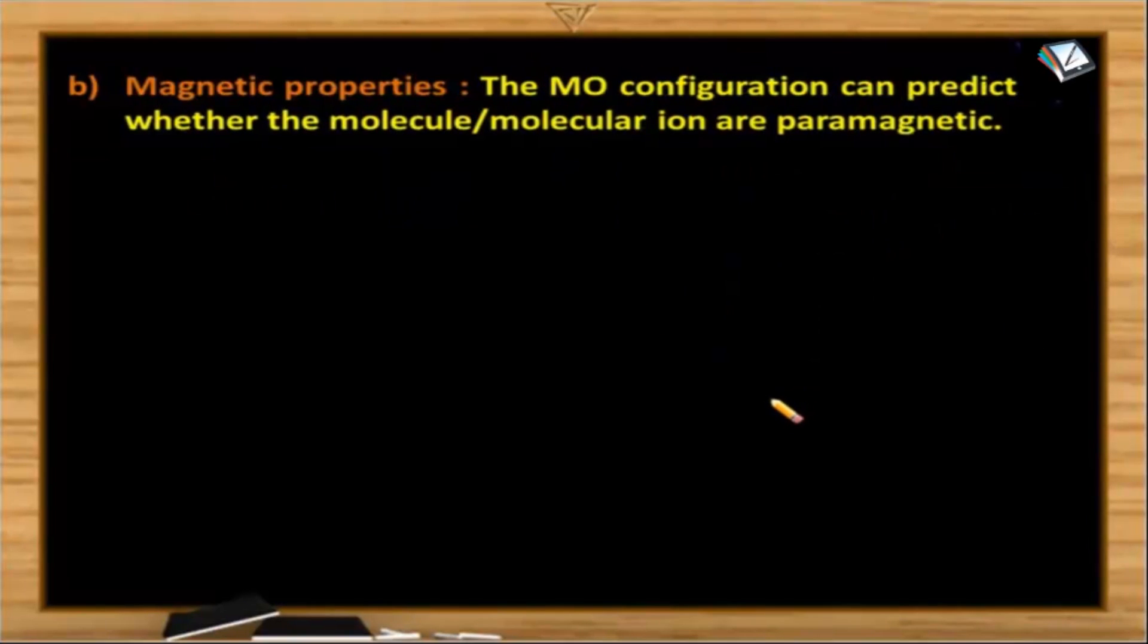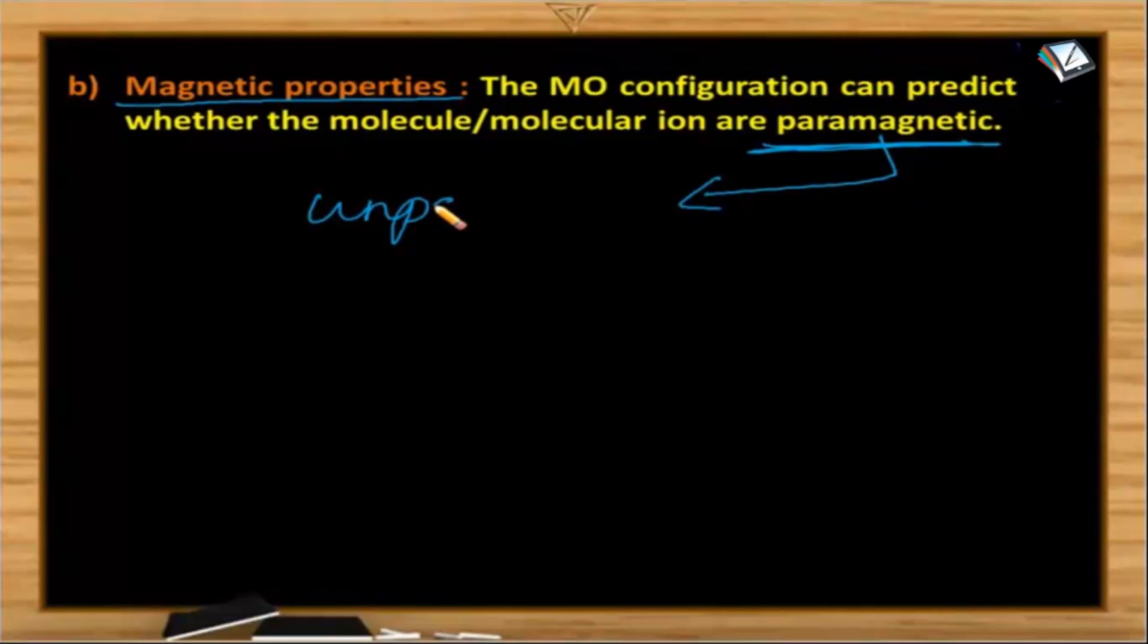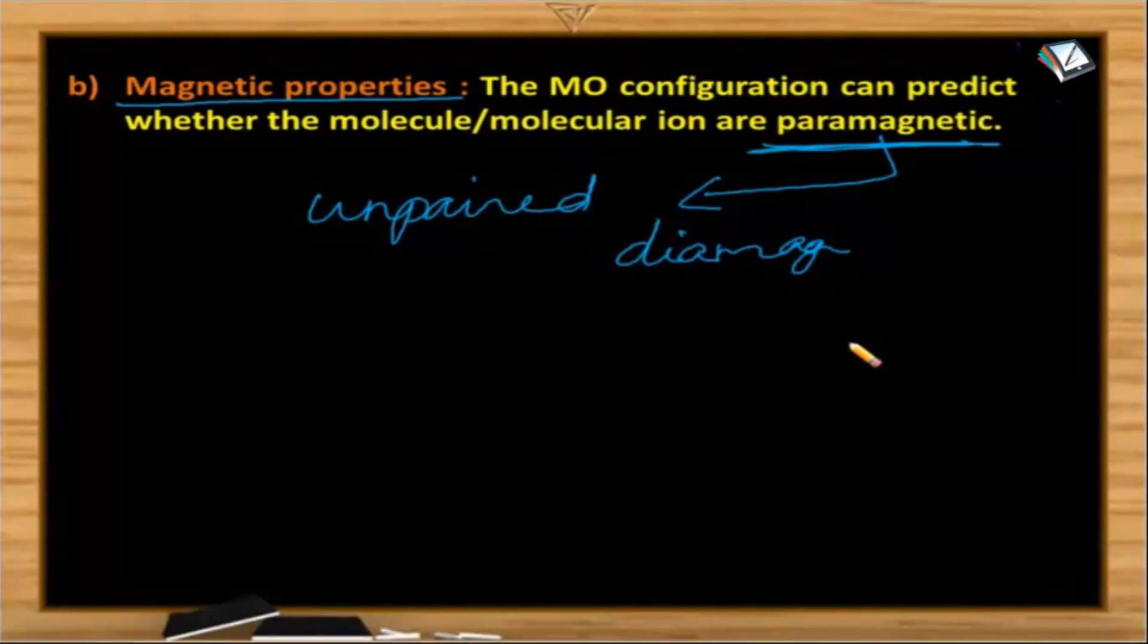Then from this molecular orbital configurations we can also know the information related to the magnetic properties. How can we know? In any of the configuration if there are unpaired electrons then definitely we can say that is paramagnetic in nature. Because we know that paramagnetic property is due to the presence of unpaired electrons. When all the electrons are paired up then that particular molecule or ion that is diamagnetic in nature. So that is about the information which we get from the molecular orbital configuration as well as from the bond order.